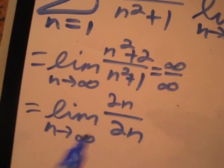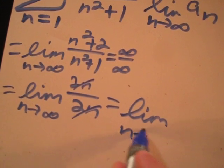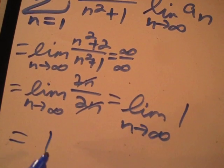And these two n's can cancel each other, and this will just become the limit as n approaches infinity of 1, which is obviously 1.